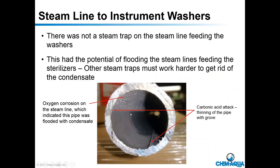Here's a situation where we knew a trap wasn't functioning. This is a live steam line going to an instrument washer. It should have had steam in it, but I saw oxygen pitting all across the top — that told me water had to be present. Also notice the grooving: this part of the pipe is thinner than this part — that's carbonic acid attack. So it had oxygen pitting, but the very last thing that occurred was a carbonic acid attack. It's like reading a tree — you can tell what's happening on the inside — that's the investigative part.